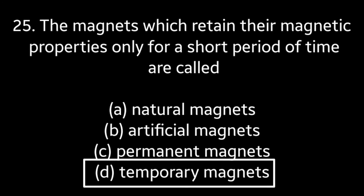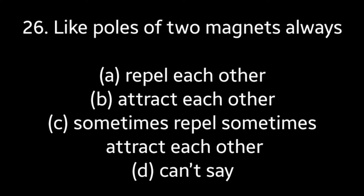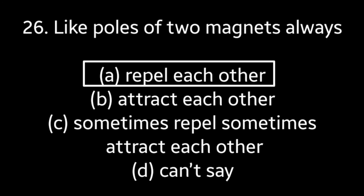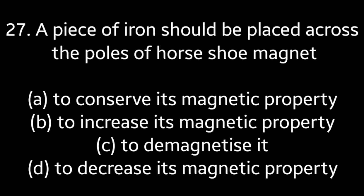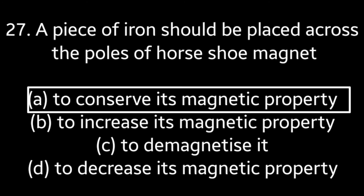Question number twenty-five: the magnets which retain their magnetic properties only for a short period of time are called — natural magnets, artificial magnets, permanent magnets, or temporary magnets? Answer is option D: temporary magnets. Question number twenty-six: like poles of two magnets always — repel each other, attract each other, sometimes repel sometimes attract, or can't say? Answer is option A: repel each other. Question number twenty-seven: a piece of iron should be placed across the poles of a horseshoe magnet — to conserve its magnetic property, to increase its magnetic property, to demagnetize it, or to decrease its magnetic property? Answer is option A: to conserve its magnetic property.